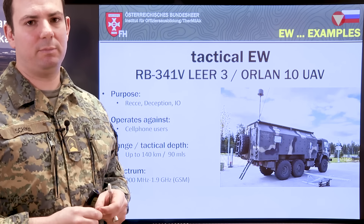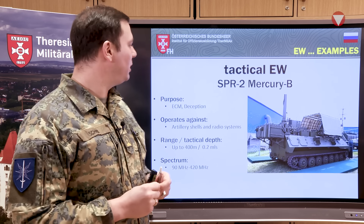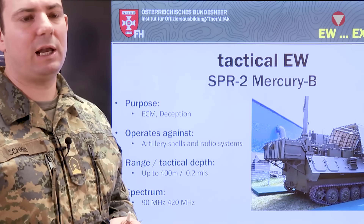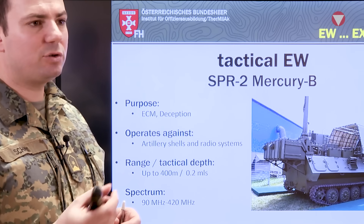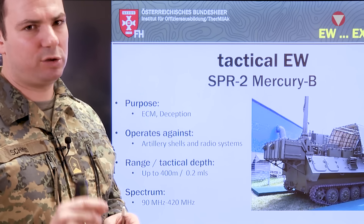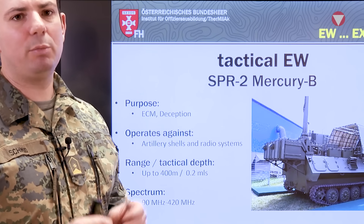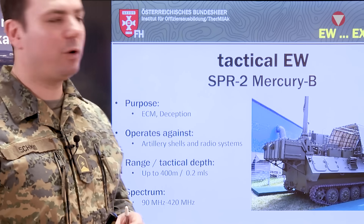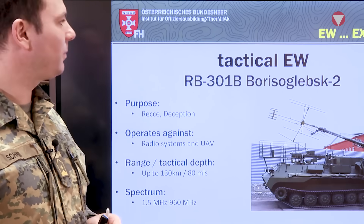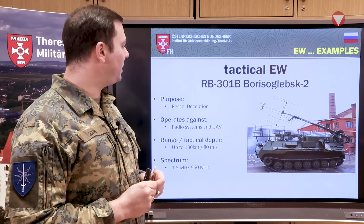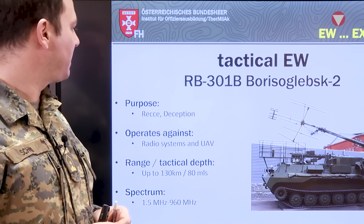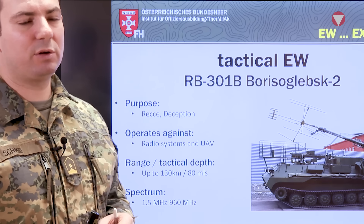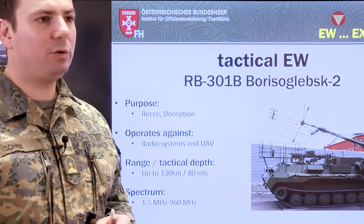The Mercury-B system operates against artillery shells and radio systems, making electronic countermeasures and deception. Its range is up to 400 meters — around 0.2 miles — and it operates in a spectrum of 90 MHz up to 420 MHz. The Boriso-Glebsk 2 system focuses on reconnaissance and deception, operating mainly against radio systems and UAVs, with a detection range up to 130 kilometers — around 80 miles — and a spectrum from 1.5 MHz up to 960 MHz.